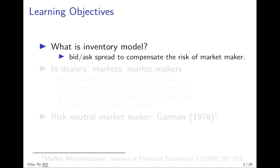The Bid-Ask Spread is the cost of immediacy, or cost of liquidity, because it allows people to buy and sell at the same time without any time delay. So in order to provide this, there is a cost — there will be risk associated with the market maker.